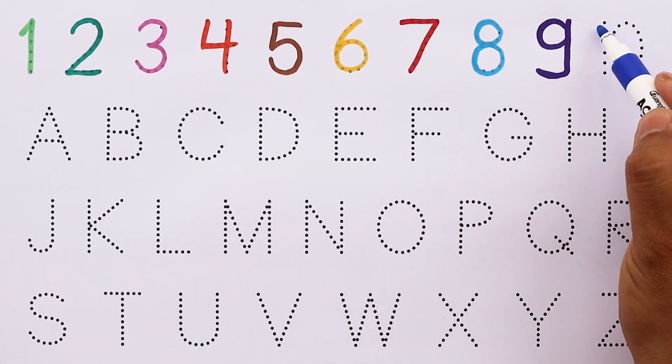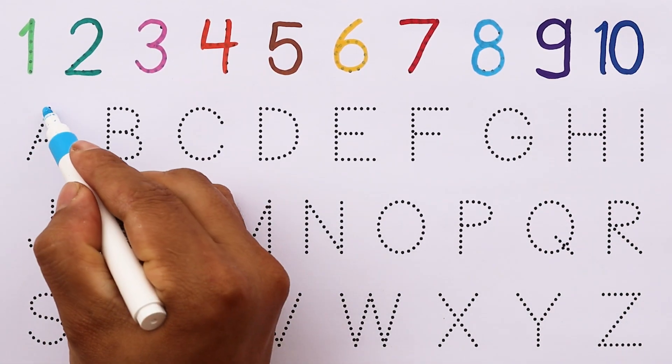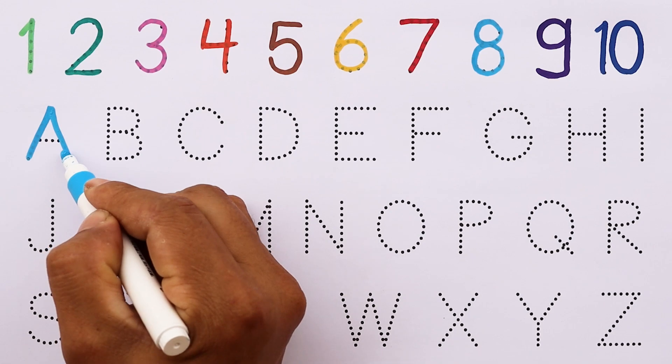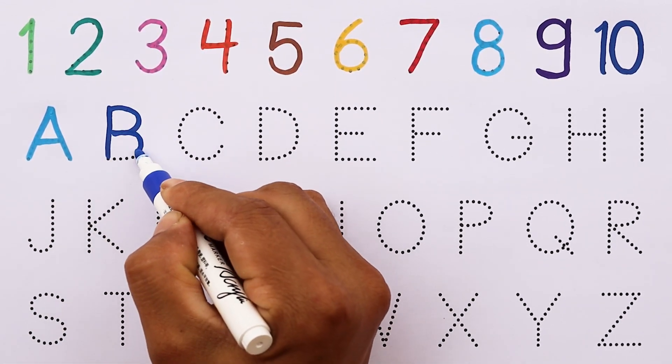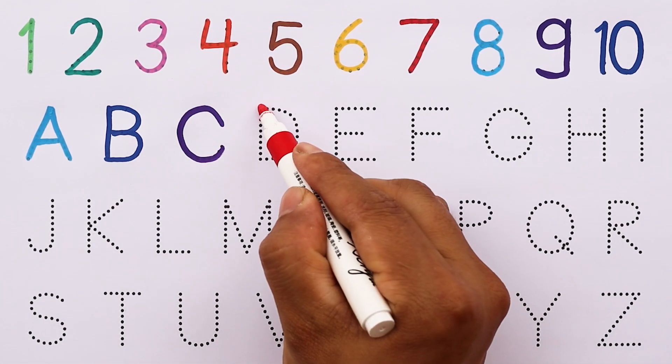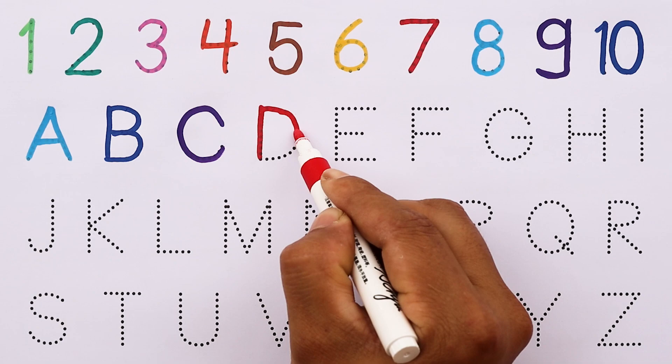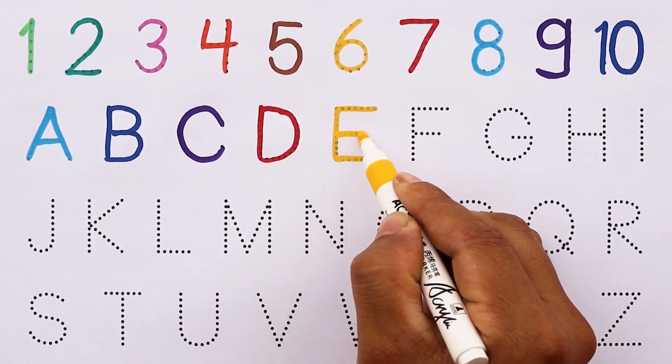9, 10, A, B, C, D, E, F, G, H, I, J, K, L, M, N, O, P, Q, R, S, T, U, V, W, X, Y, and Z. Now I know my ABCs.